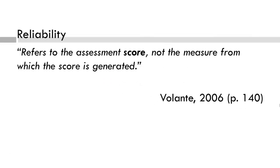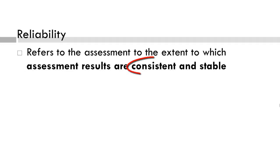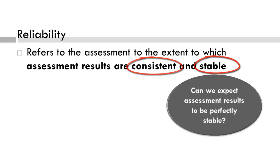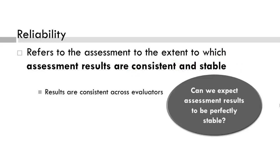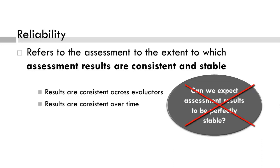Take a moment to read this slide about reliability from Volante. Reliability has to do with consistency and stability of the assessment results — scores are consistent across evaluators or over time. An assessment is considered reliable when you get the same results regardless of when the assessment occurs or who does the assessment. The next video will examine ways to minimize the error associated with assessment results and improve consistency, but we can never expect 100% reliability.